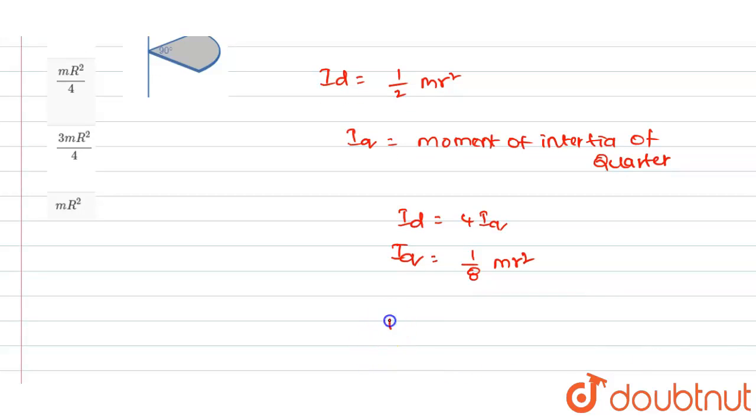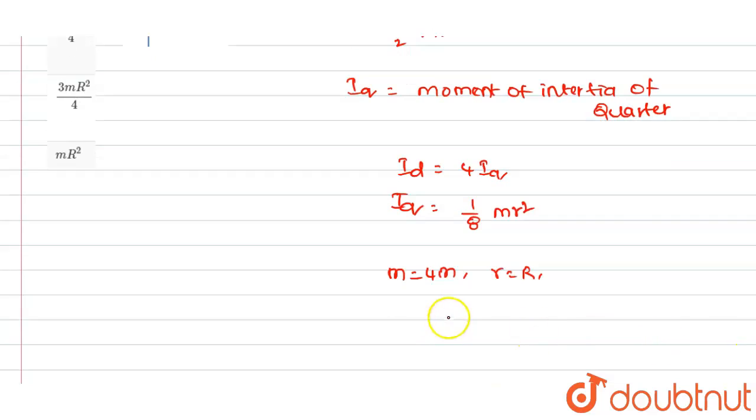By substituting the value of m equals 4m, the value of small r will be equal to capital R. To get the value of Iq will be equal to half mR squared.